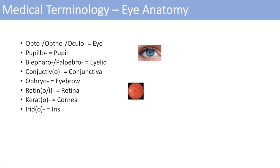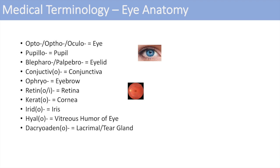The next one is irido, which stands for the iris — the colored portion of your eye. The next one is hyalo, which stands for the vitreous humor of the eye, the gelatinous substance within your eyeball. The next one is dacryoadeno — adeno stands for gland, and dacryo means tear, so it's the tear gland or lacrimal gland. The lacrimal gland is on the lateral side of your eyes, and lacrimal also denotes the tear duct where your tears drain.